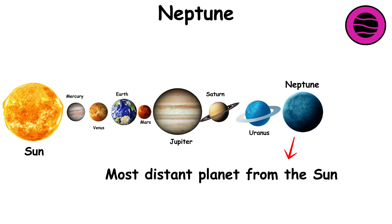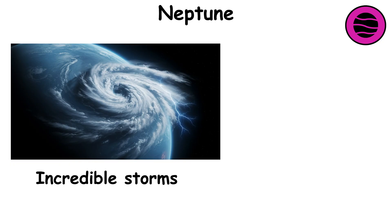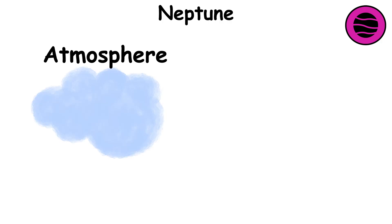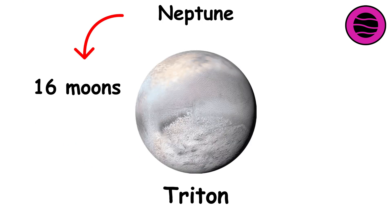Neptune is the eighth and most distant planet from the Sun. It is known for its incredible storms. Wind speeds can reach 2,100 kilometers per hour, making them the fastest in the solar system. Neptune's atmosphere contains methane, giving it its deep blue color. It has 16 moons, with the largest being Triton, which orbits in the opposite direction.